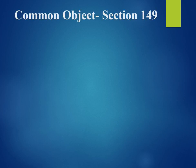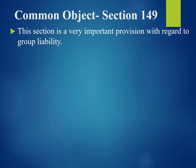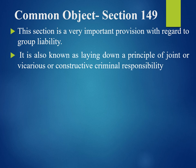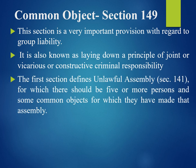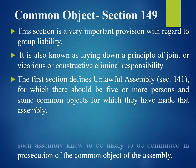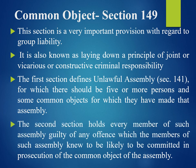The second very important term is common object, which is covered under Section 149 of IPC. This section is a very important provision with regard to group liability. It is also known as laying down a principle of joint, vicarious, or constructive criminal liability or responsibility. It consists of two sections: the first is Section 141, which defines unlawful assembly — for which there should be five or more persons and some common object for which they have made that assembly — and the second section holds every member of such assembly guilty of any offence which the members knew to be likely to be committed in prosecution of the common object of the assembly.